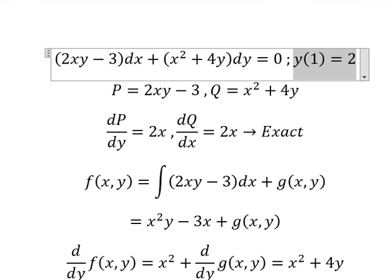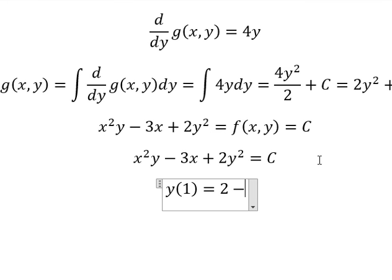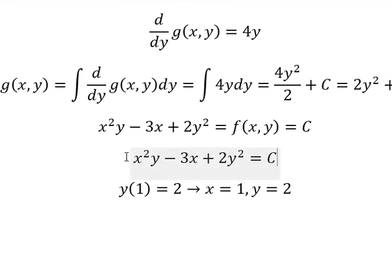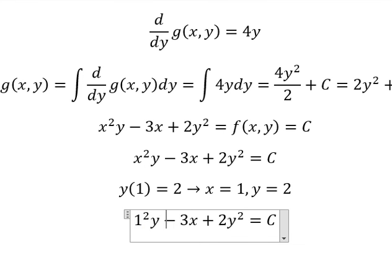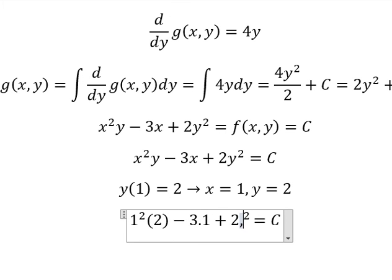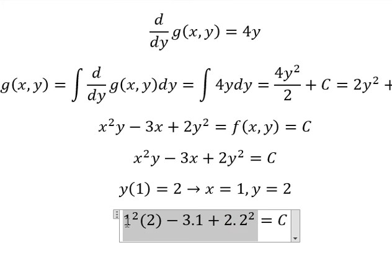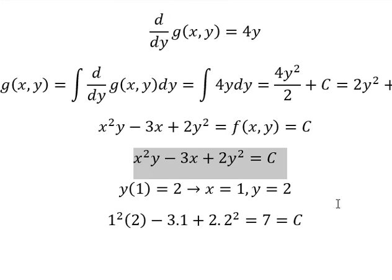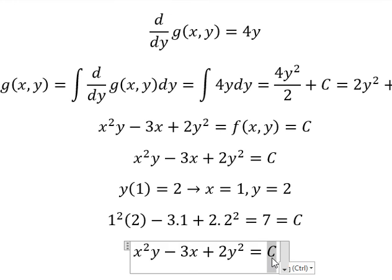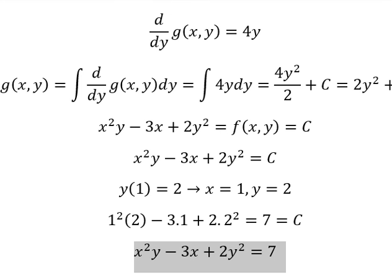We have the conditions. When x equals 1, y equals 2. And now we can put number 1 and number 2 in here to find the value of c. We calculate about this one and that is about 7. So we can put number 7 in here. And this is the final answer.